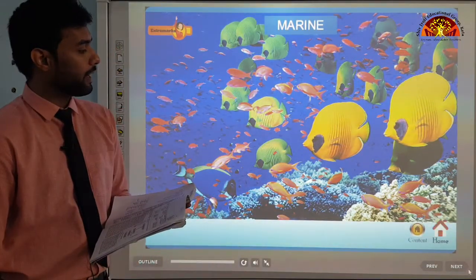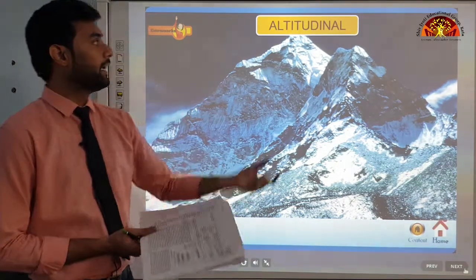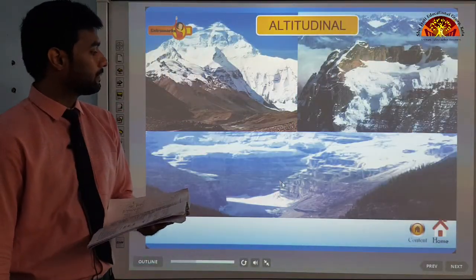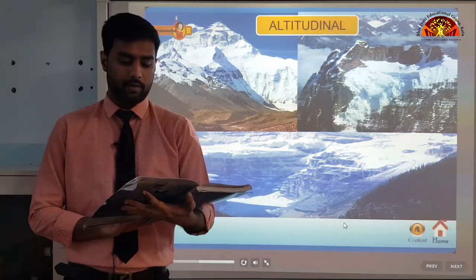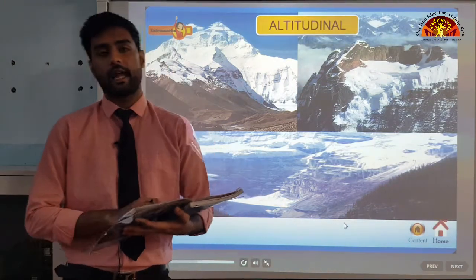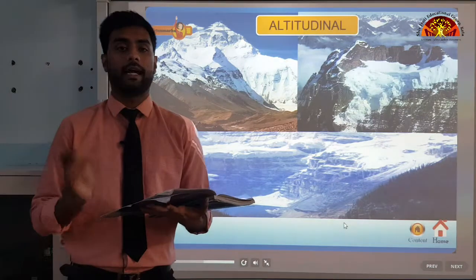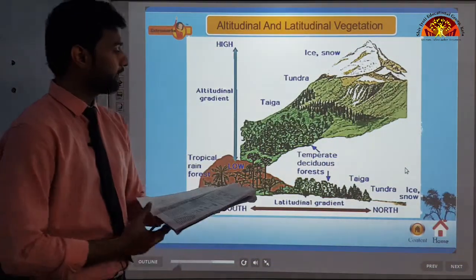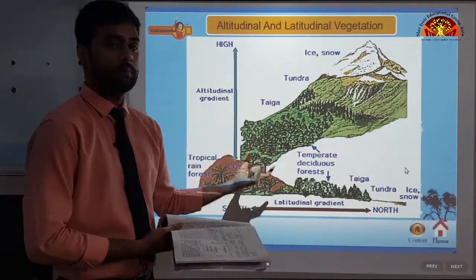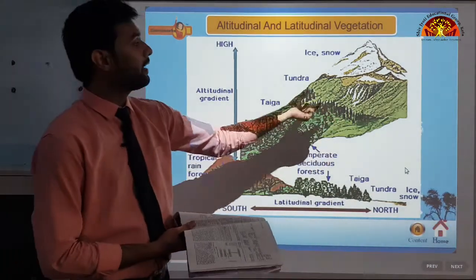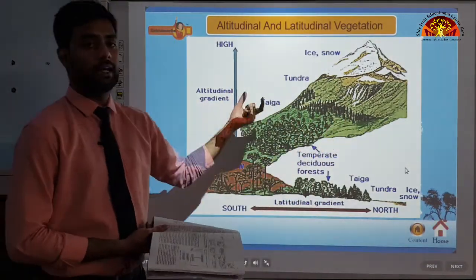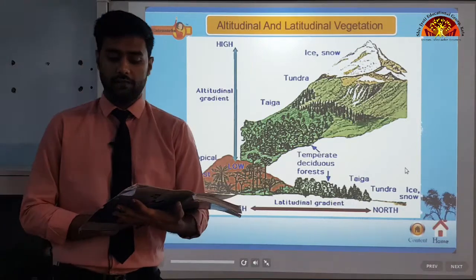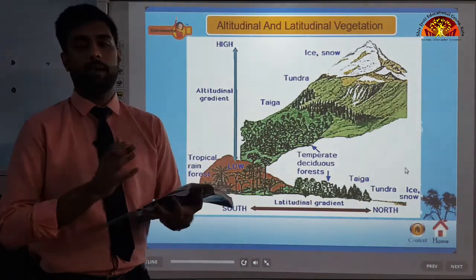The altitudinal biome refers to life on mountains. Prominent examples include the slopes of the Himalayas, the Andes and the Rockies. Temperature and precipitation depend upon the latitudinal zone and altitude. At the base of the mountain you find greenery, but as you go up, vegetation diminishes and is replaced by ice and snow at the peak. Flora and fauna range from deciduous to tundra vegetation, varying according to altitude.